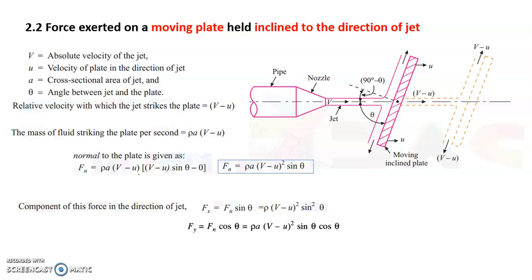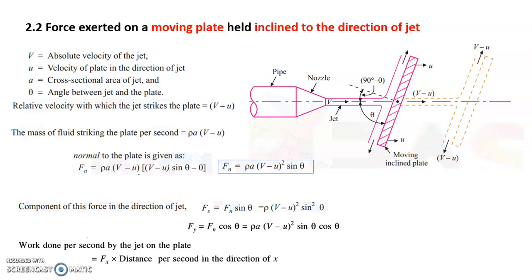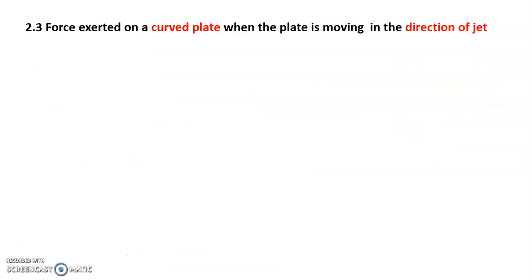Work done per second equals Fx times u, where u is the distance traveled per second (i.e., the plate velocity) in the x-direction. The unit of work done per second is Newton-meter per second. The formula is: work done per second equals rho times a times (v minus u) squared times sine squared theta times u. From this you can also calculate efficiency.